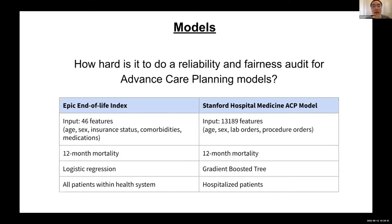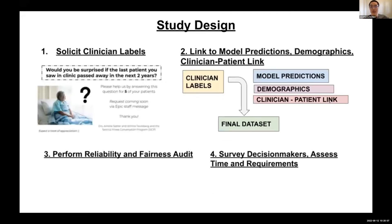The goal is to enable advanced care planning conversations so patients receive goal-concordant care. We have the Epic End-of-Life Index, a logistic regression running for all patients within the health system, and the Stanford Hospital Medicine ACP model, currently used in the hospital medicine unit to flag and prioritize hospitalized patients for advanced care planning.